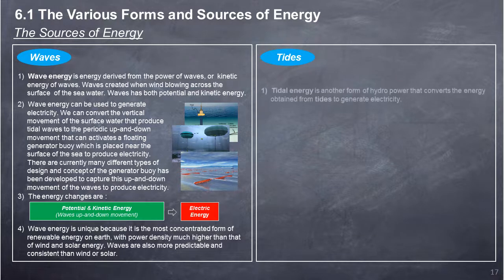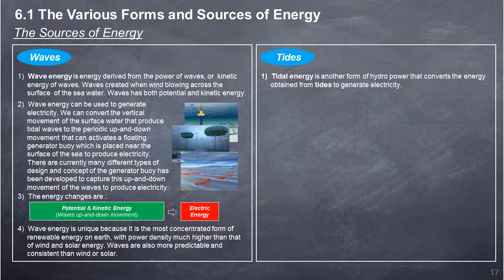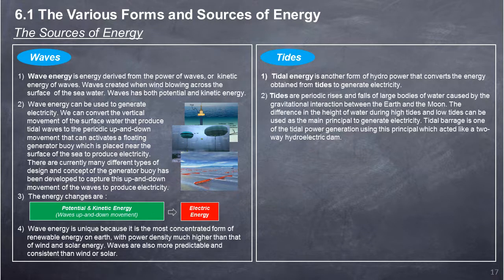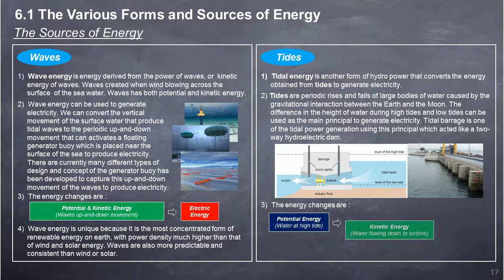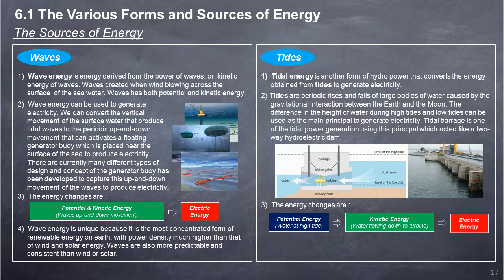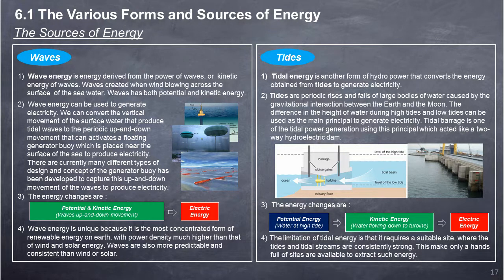Tidal Energy: Tidal energy is another form of hydropower that converts the energy obtained from tides to generate electricity. Tides are periodic rises and falls of large bodies of water caused by the gravitational interaction between the earth and the moon. The difference in water height during high tides and low tides can be used to generate electricity. A tidal barrage is one type of tidal power generation using this principle, acting like a two-way hydroelectric dam. The energy change is: potential energy of water at high tide → kinetic energy of water flowing down to the turbine → electric energy. The limitation of tidal energy is that it requires a suitable site where tides and tidal streams are consistently strong, making only a handful of sites available.